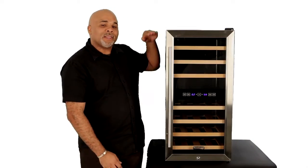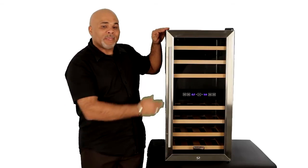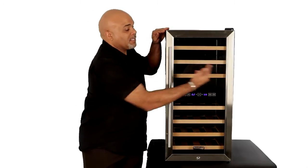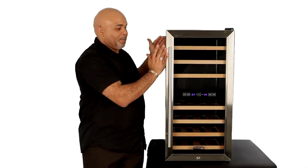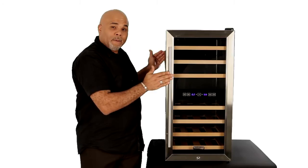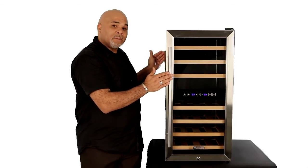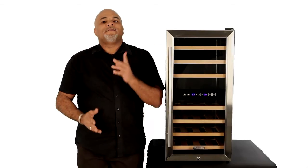The unit measures 33 and a half inches high, 15 and three quarter inches wide, and from the back to the front of the door it's 20 inches deep. To the front of the towel bar handle, the depth becomes 22 and a half inches.